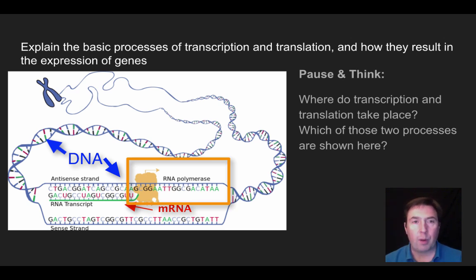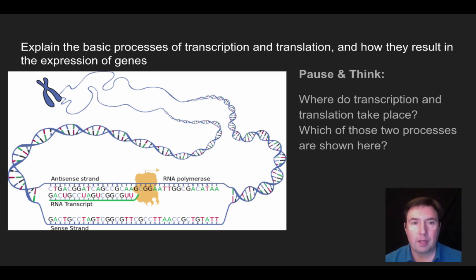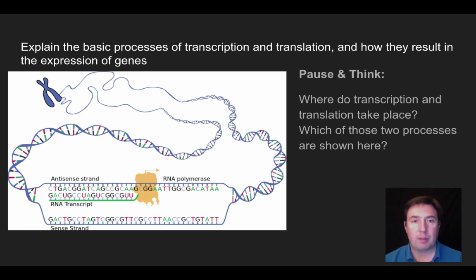Within the nucleus, enzymes open up the DNA strand and use one of those strands as a template, and then RNA polymerase makes a complement to the template strand of DNA. We end up making the mRNA that can be used out at the ribosome once it leaves the nucleus.